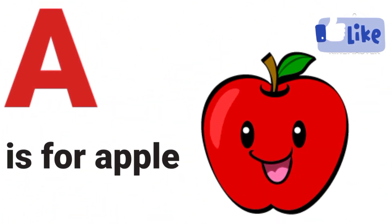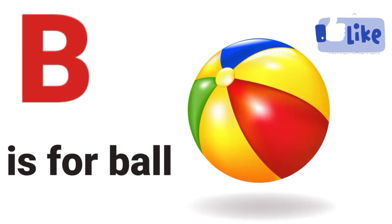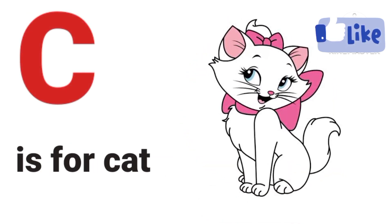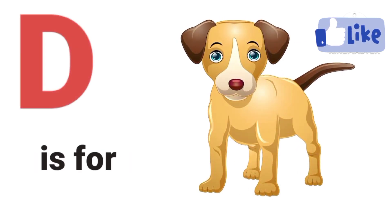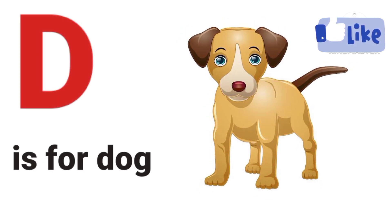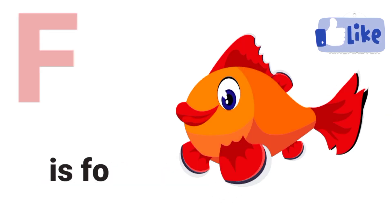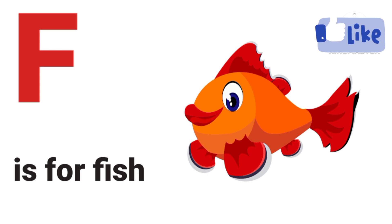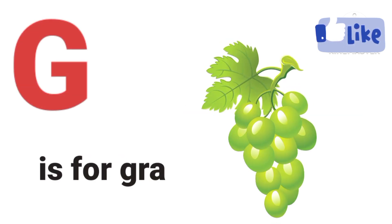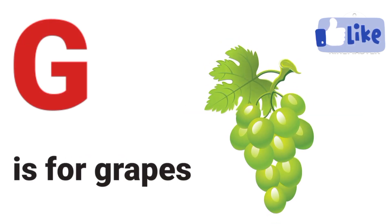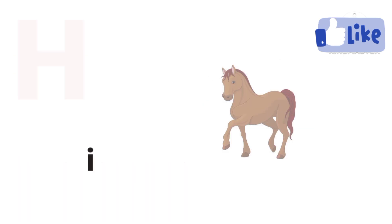A is for Apple. B is for Ball. C is for Cat. D is for Dog. E is for Elephant. F is for Fish. G is for Grapes.